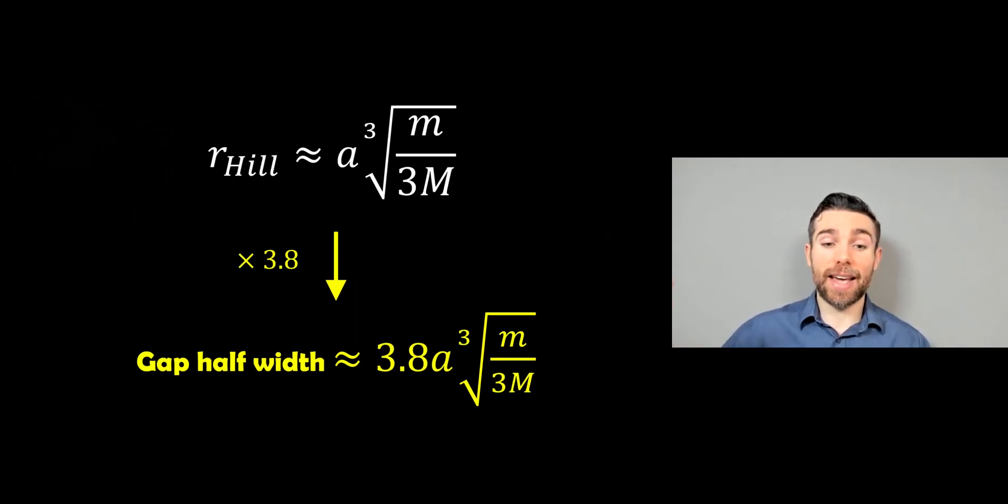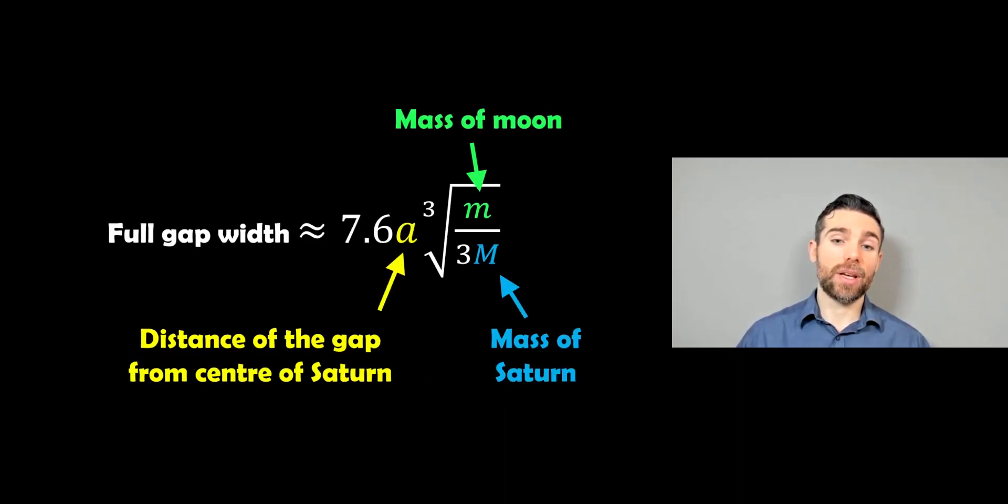So we can basically write the gap half width like this here because we just times it by 3.8. So the gap half width is given by 3.8 times this semi-major axis. And then you take the cube root of the mass of the moon over 3 times the mass of Saturn. And that would be our gap half width. And the only thing we don't know in that equation is the mass of the moon. So what we would actually do, so first we're going to go for the full gap width because we can measure the full gap width there. Or we can leave it as the half one. We just half it. So there we've got the mass of the moon, which is your lower case m, mass of Saturn, which is your upper case. And then A, which is the distance where the gap is from the center of Saturn. So we would know where that is.